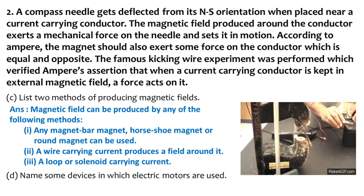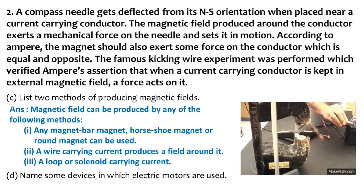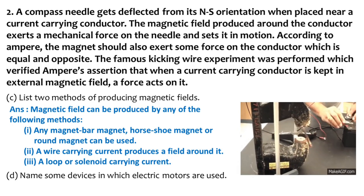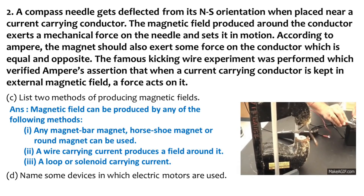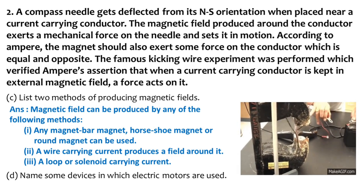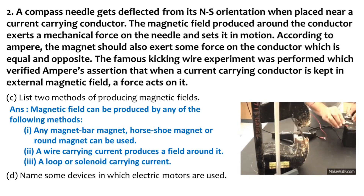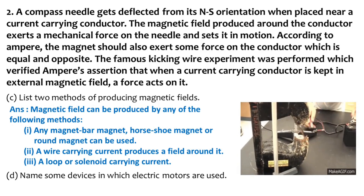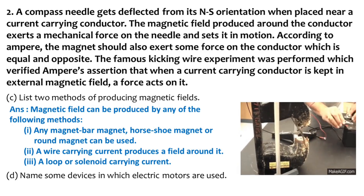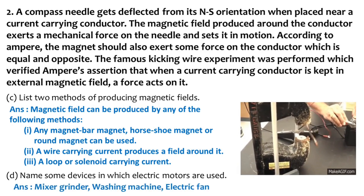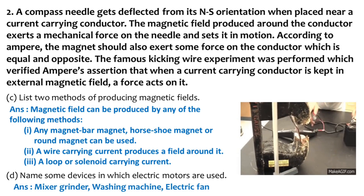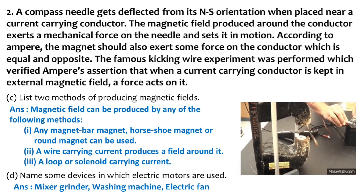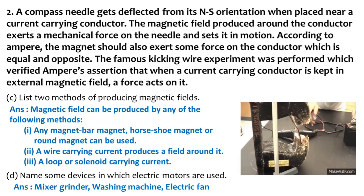Name some devices in which electric motors are used. An electric motor is a device that converts electrical energy to mechanical energy. So look around you and find devices that convert electrical energy to mechanical energy — devices like washing machine, mixer grinder, electric fan, electric pump, etc., which have electric motors in them. That's the end of the second case study.